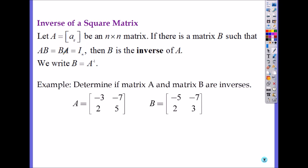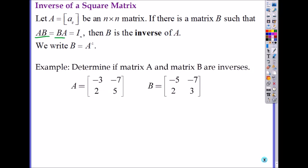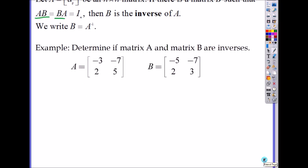So let's determine whether A and B are inverses of each other. What do we need to do? We need to check A times B and B times A. If both become the identity matrix, then they are inverses of each other — that's how you prove it. Let's try A times B first.